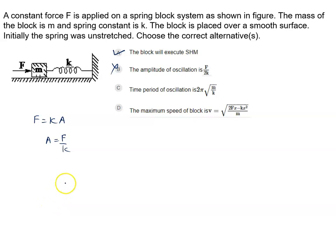Then time period of oscillation. Of course, time period does not depend on the external force. So time period of oscillation is correct: 2 pi root M by K.